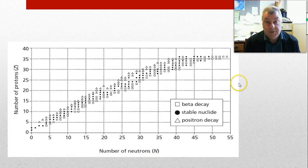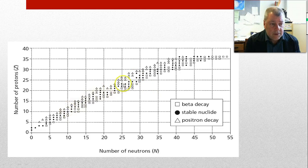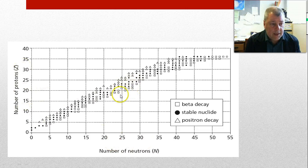And back to this diagram that we've seen before, which we mentioned earlier, so it all should start making some sense. Here's our line of stability, which are the black dots, and we've got a curve downwards. So this is neutrons and protons, and the squares represent beta decay, and the triangles represent positron decay.